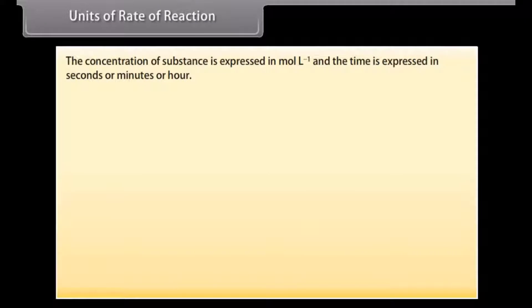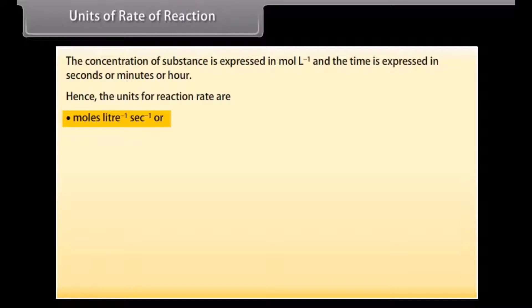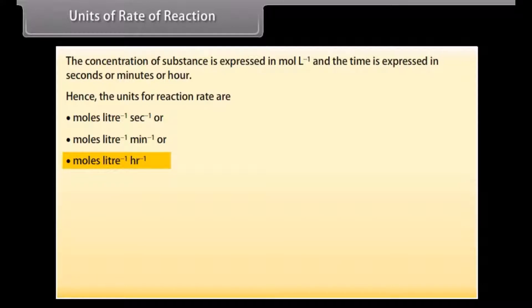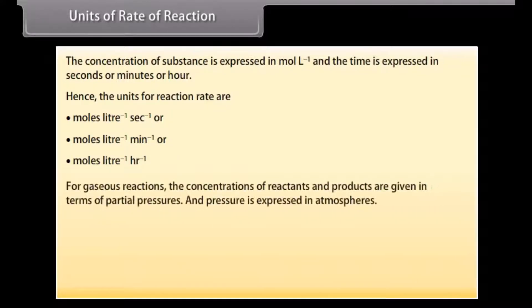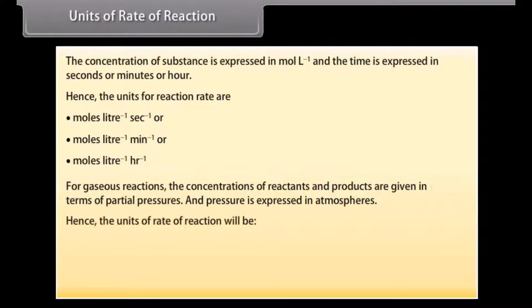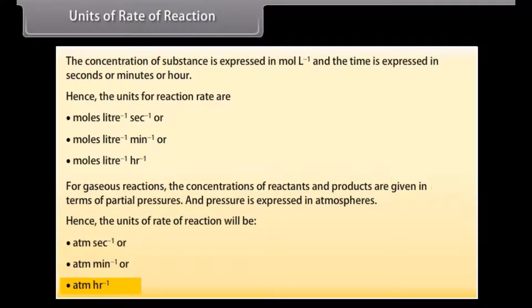Units of rate of reaction. Concentration is expressed in moles per litre and time in seconds, minutes, or hours. Hence, the units for reaction rate are moles per litre per second, moles per litre per minute, or moles per litre per hour. For gaseous reactions, concentrations are given in terms of partial pressures expressed in atmospheres. Hence, the units of rate of reaction will be atm per second, atm per minute, or atm per hour.